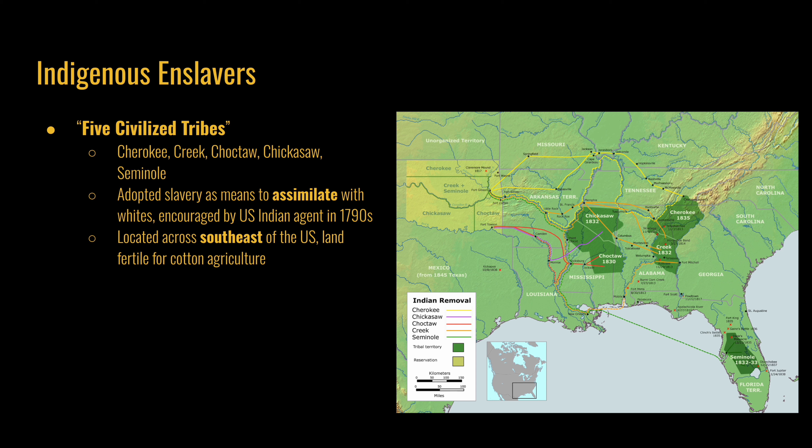It was quite profitable for the Five Civilized Tribes given that their territory in the Southeast United States is where cotton agriculture later flourished, in the states of Georgia, Alabama, Mississippi, and Tennessee.